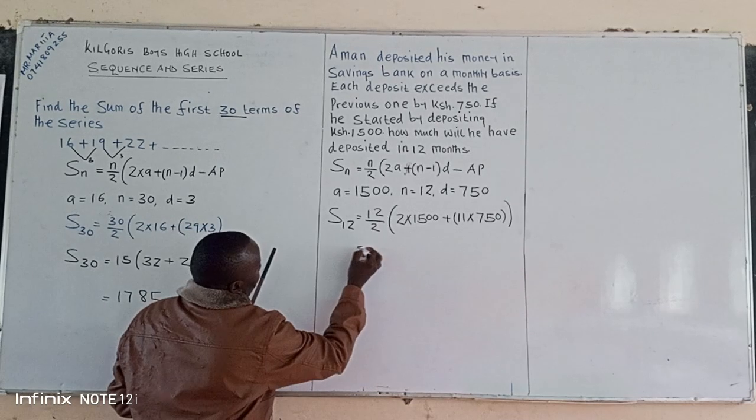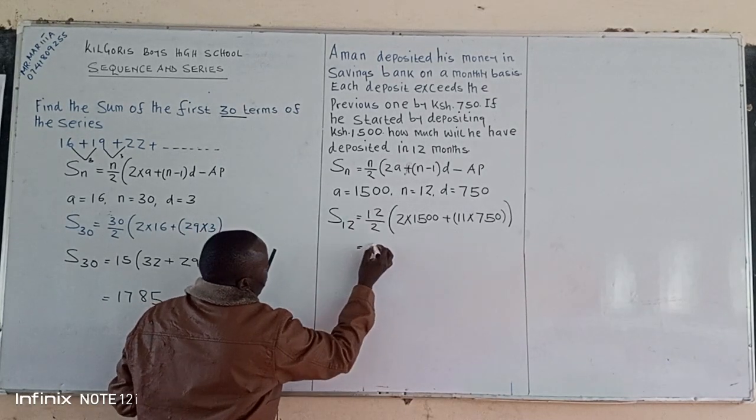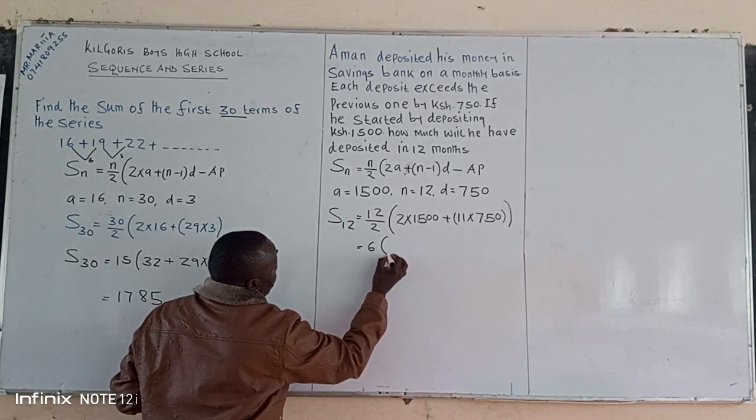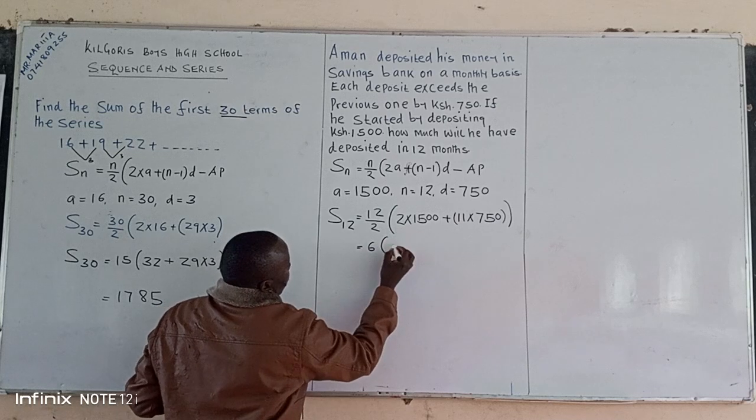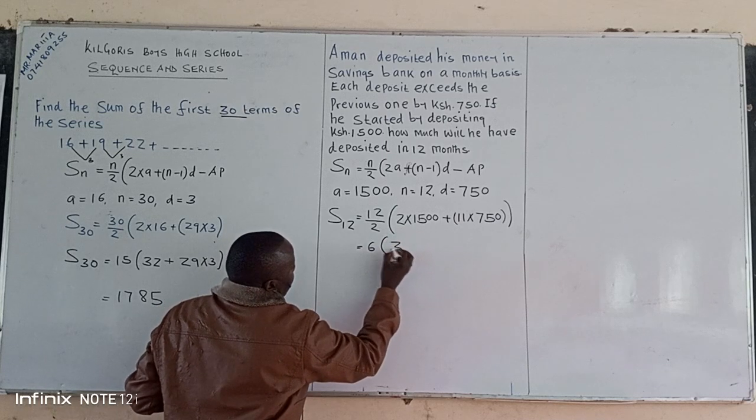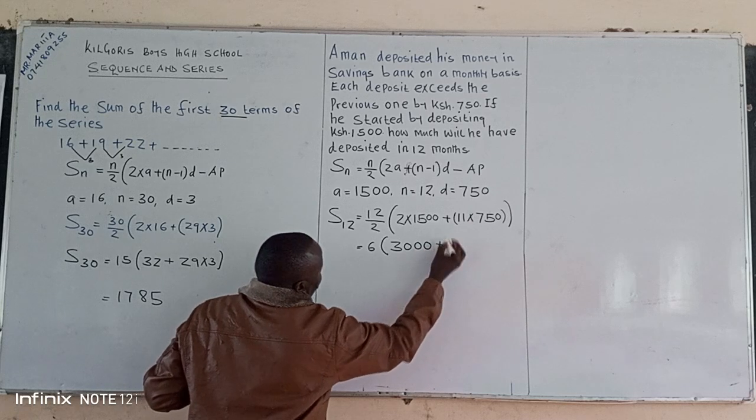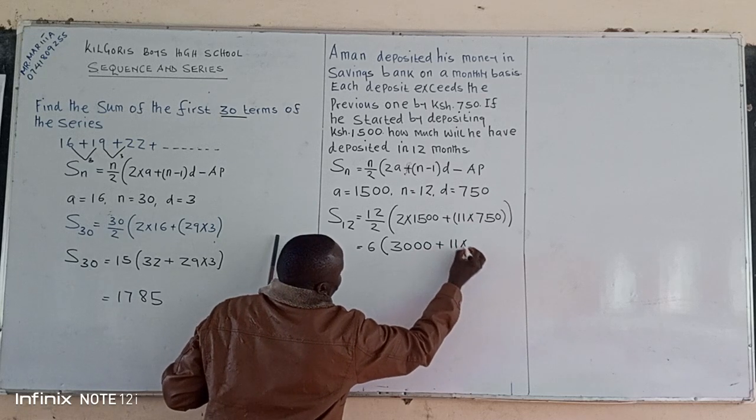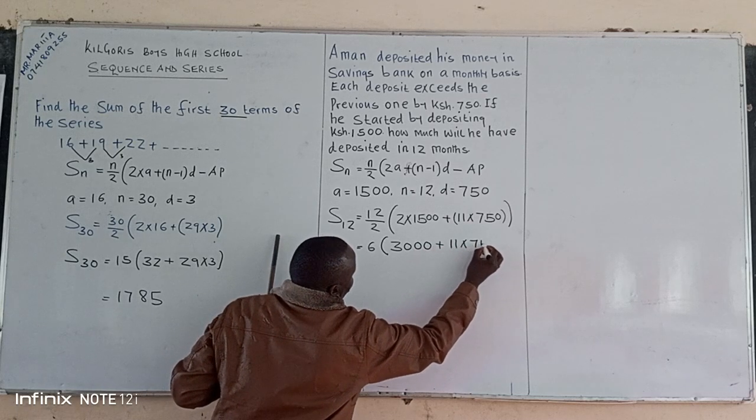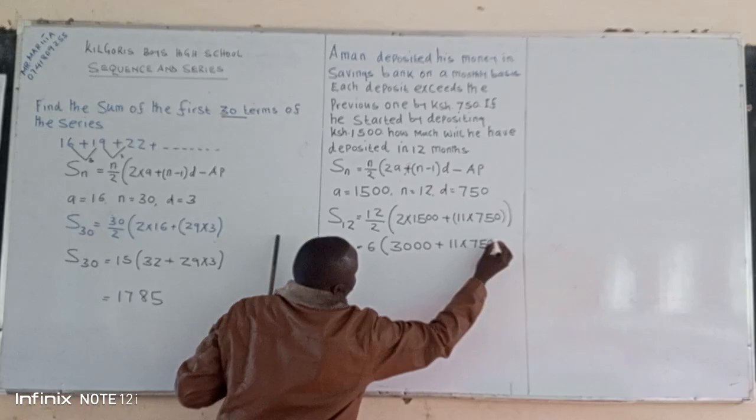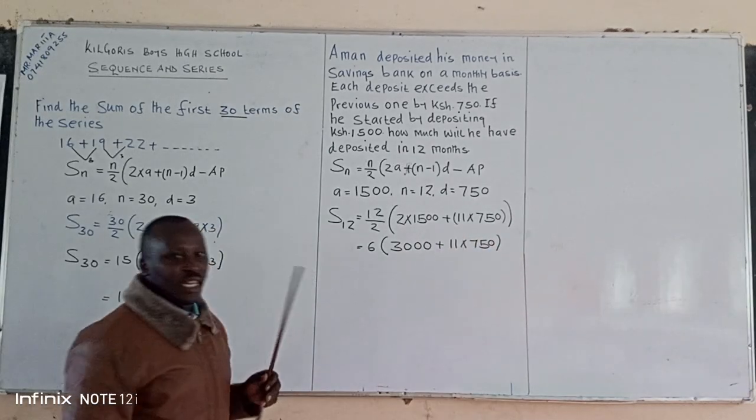So this one we can have 12 by 2 we have 6, then we have 2 times 1500, then we have 3000 plus, we have 11 multiplied by 750.